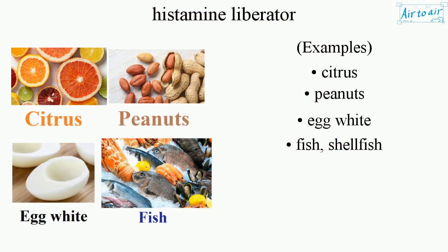Examples of histamine liberators include citrus, peanuts, egg white, fish, and shellfish.